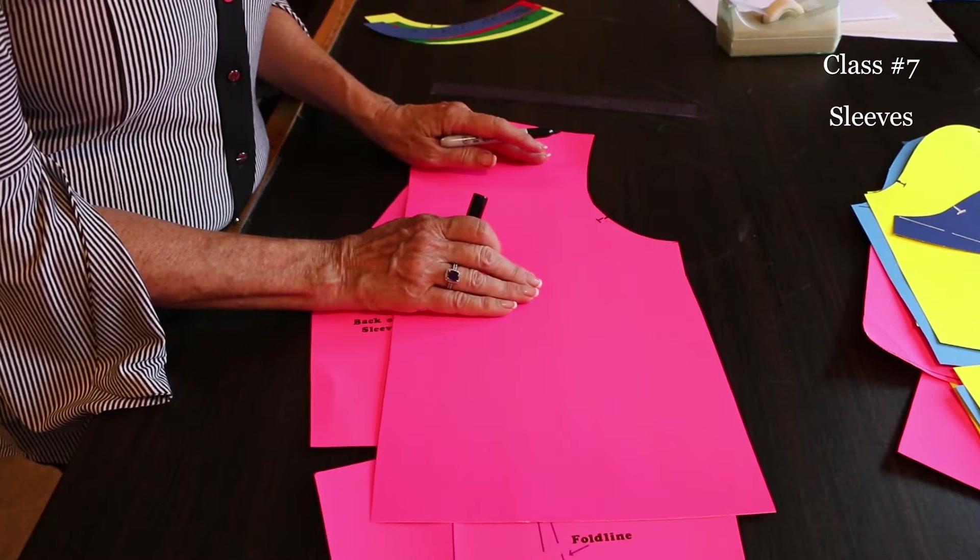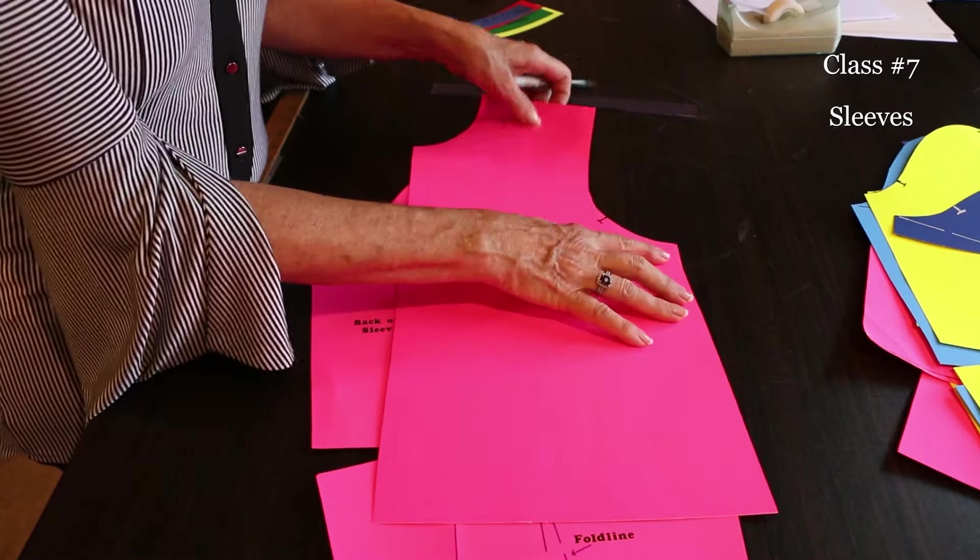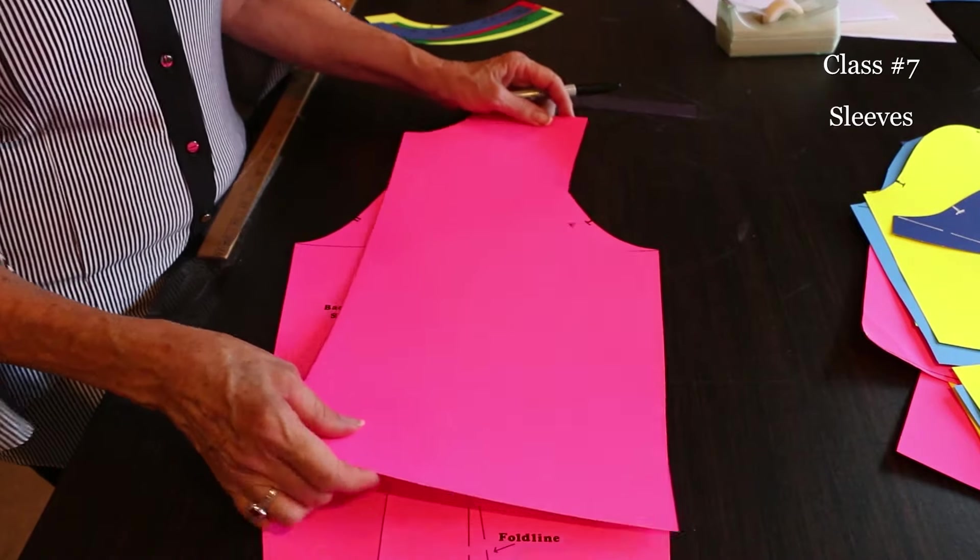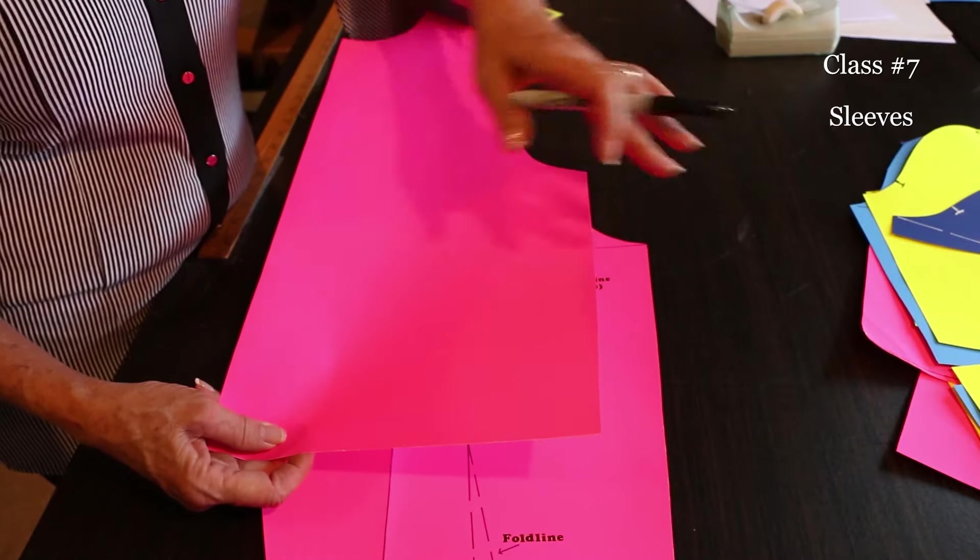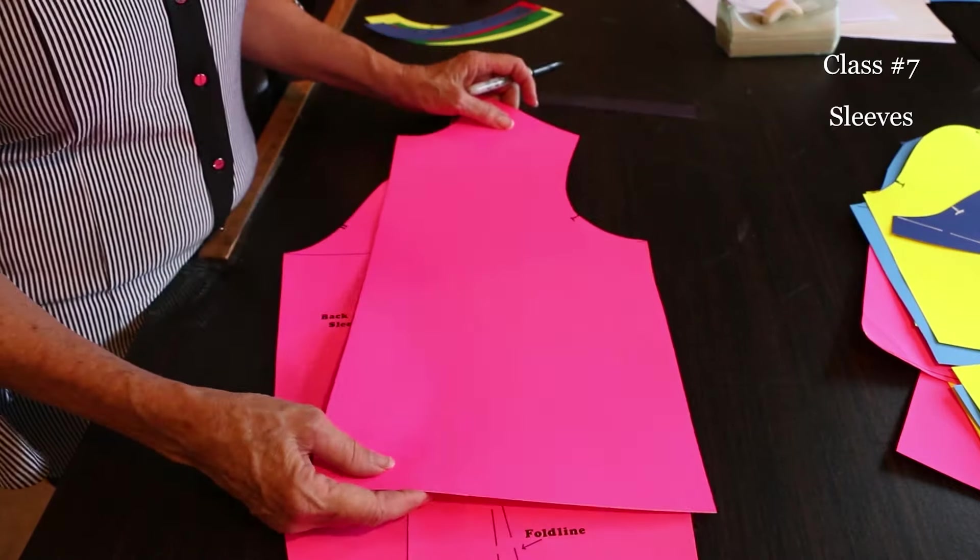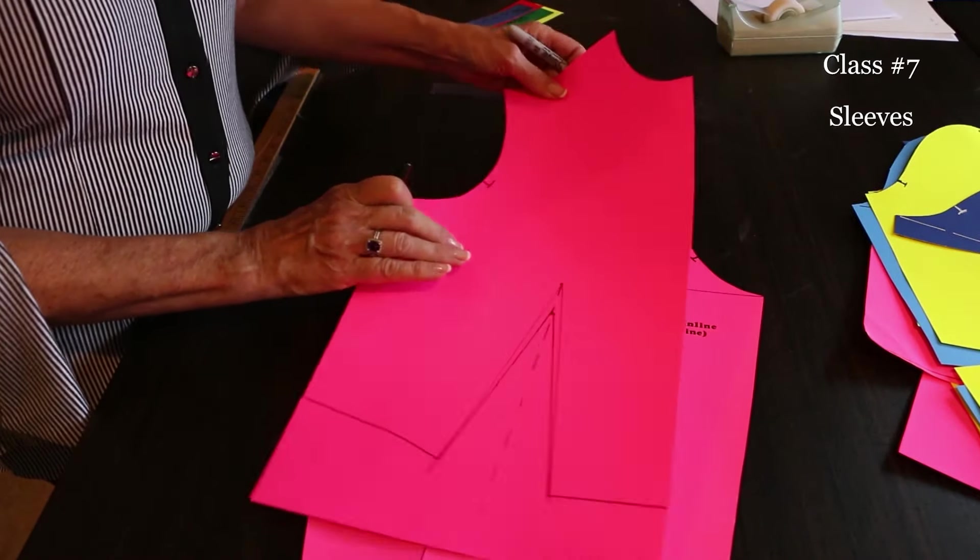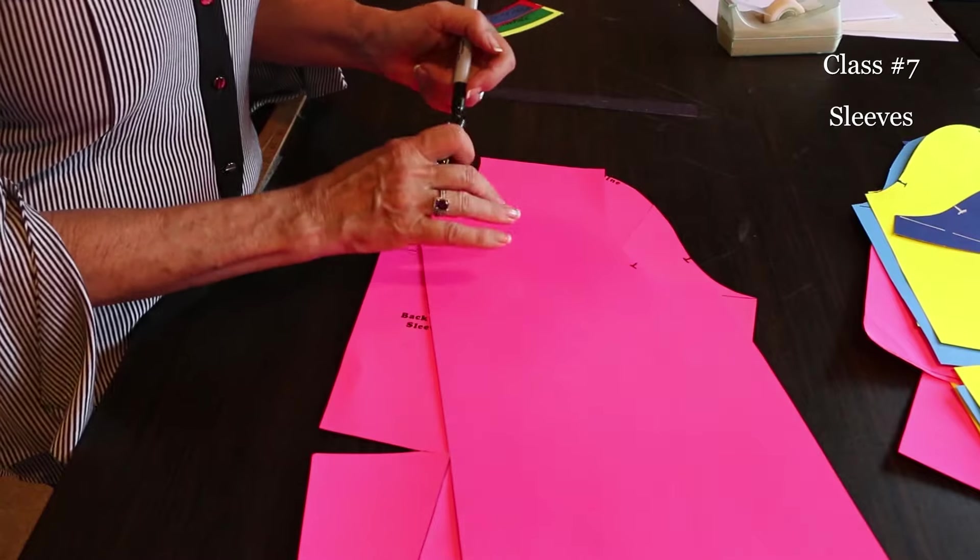If I were to superimpose the front onto the back, what I want you to notice is that the notches align. So the distance and the shape from the side to the first notch, the bodice and the sleeve are going to be the same. For many years, if you've wanted more width in the bodice, you've added at the side. And that's why it messes up the relationship, and that's why it doesn't work.